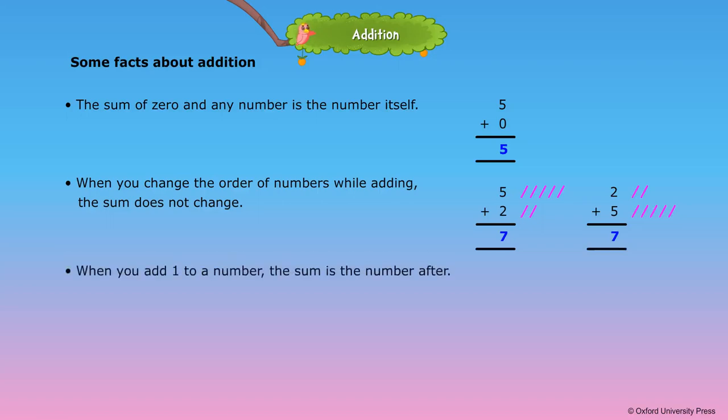When you add 1 to a number, the sum is the number after. 6 plus 1 is equal to 7.